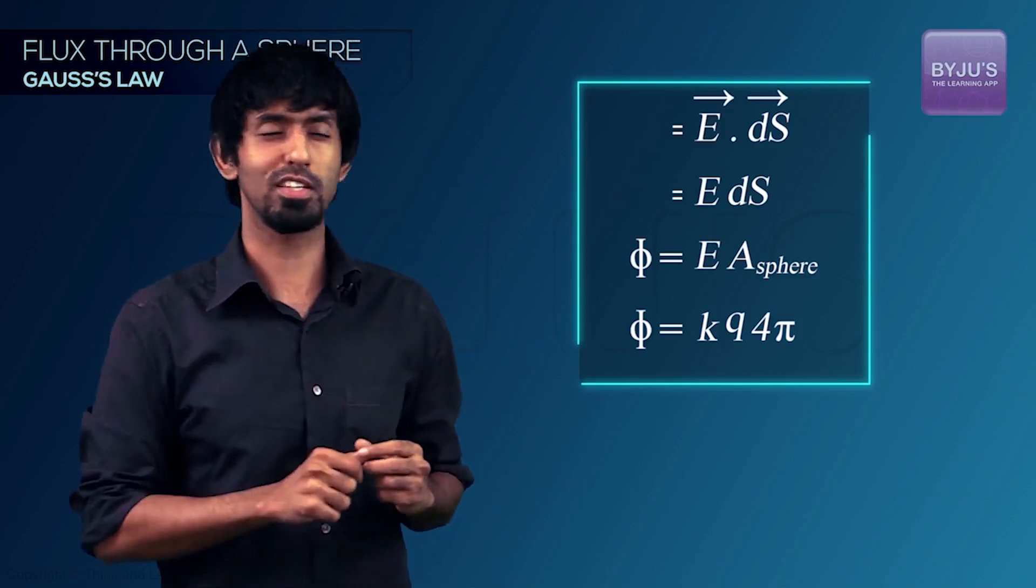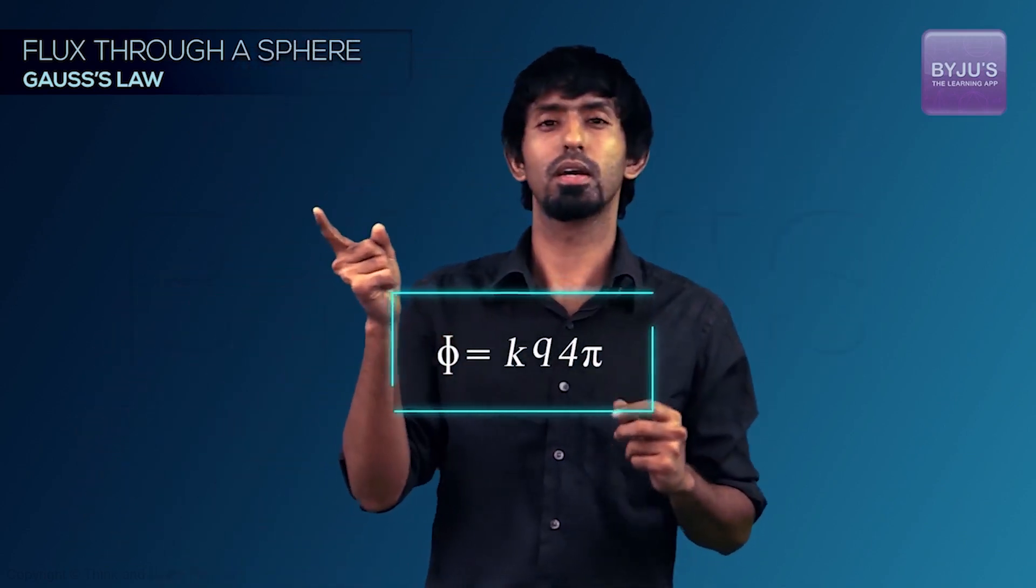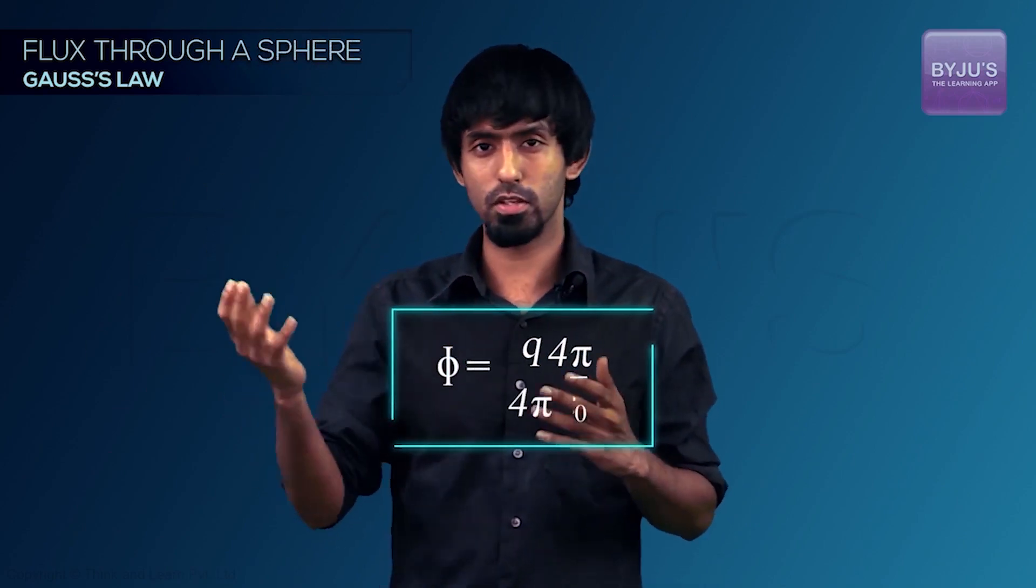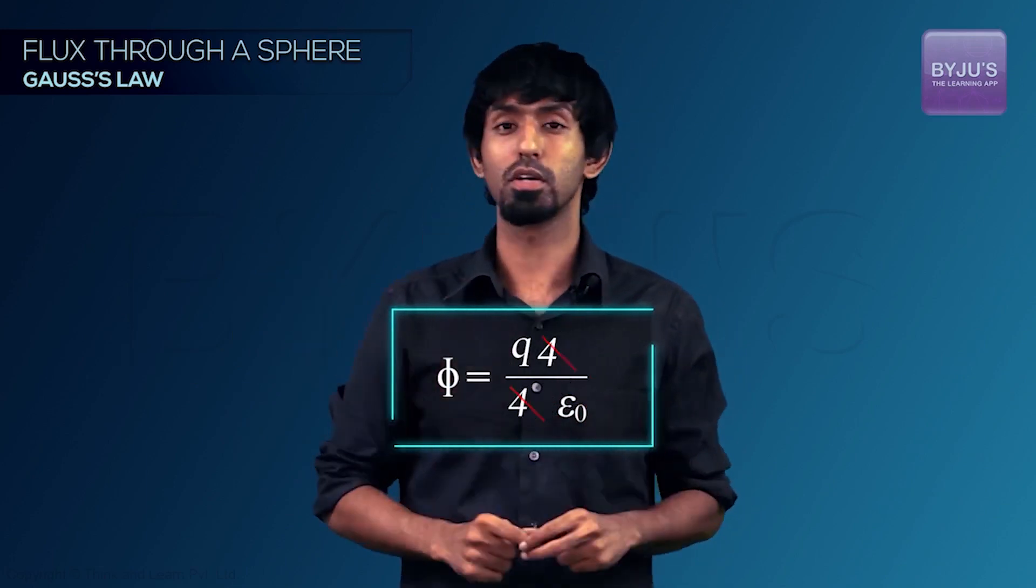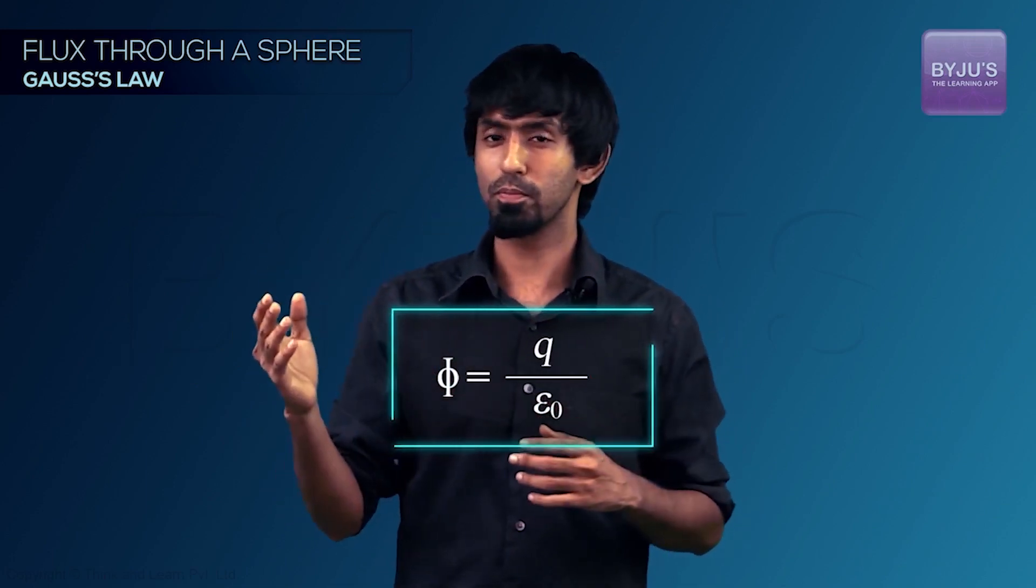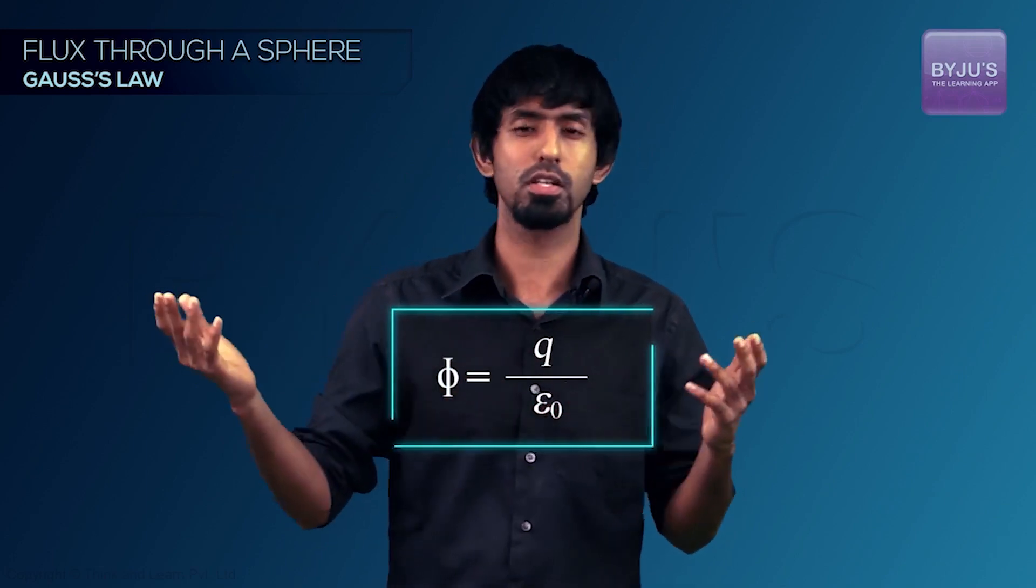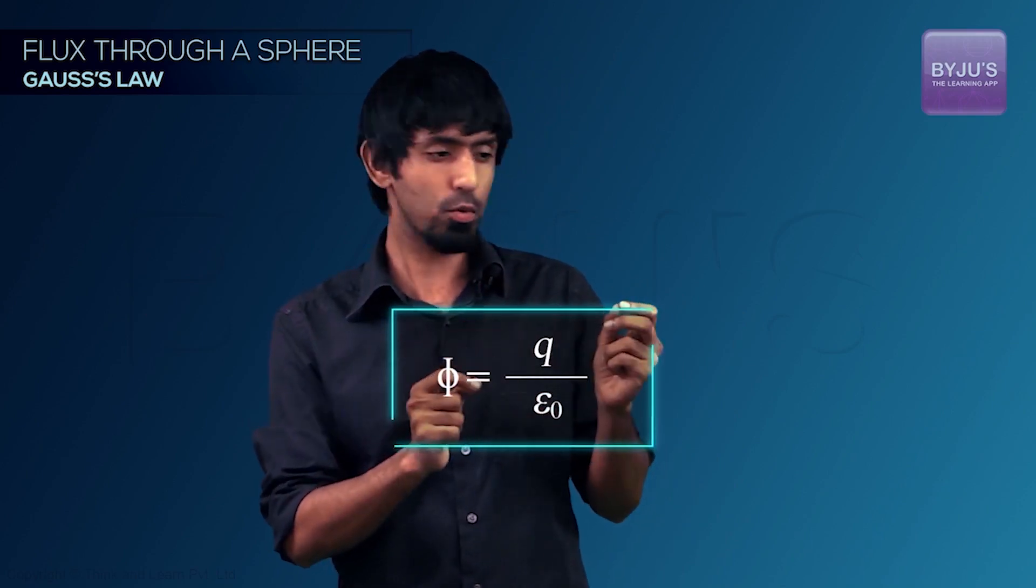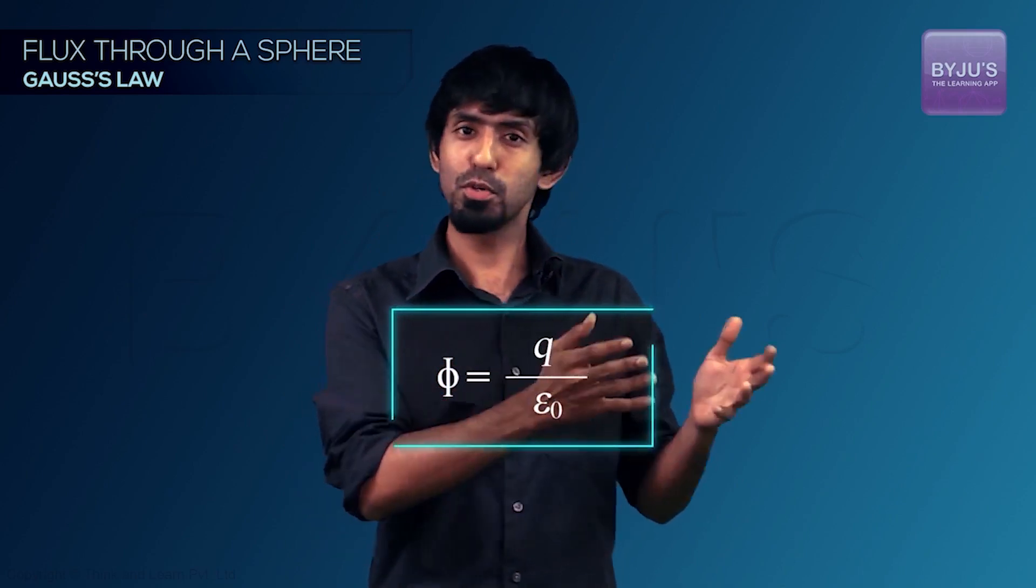Now let's observe one more interesting thing. If you bring that equation over here, you have KQ into 4π. But what is K? K is 1 by 4π epsilon-naught. And there what's going to happen is the 4π and 4π are going to cancel. So you get the flux to be equal to Q by epsilon-naught. Of course if that's a vacuum, Q by epsilon if it is some other medium. So you're getting the net flux through a sphere to be equal to Q by epsilon-naught, and it's independent of the radius. And that's beautiful.